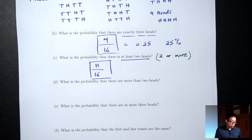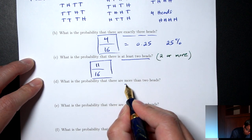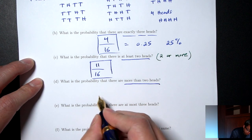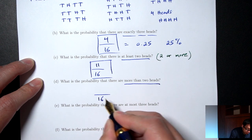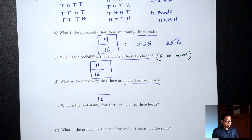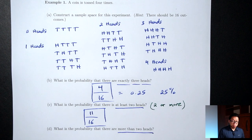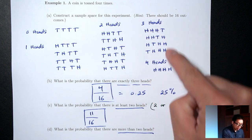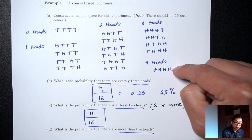Part D: what's the probability that there are more than two heads? Bottom is 16. More than two means you don't include two — so that's only three heads and four heads: 4 + 1 = 5 outcomes. Probability is 5/16.